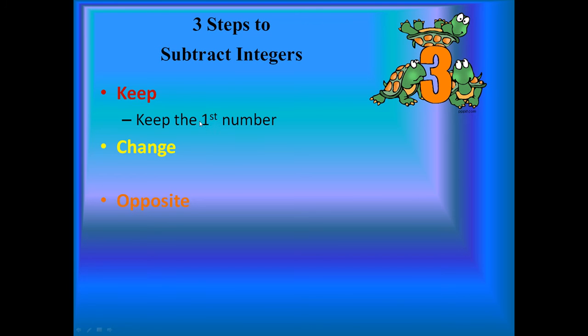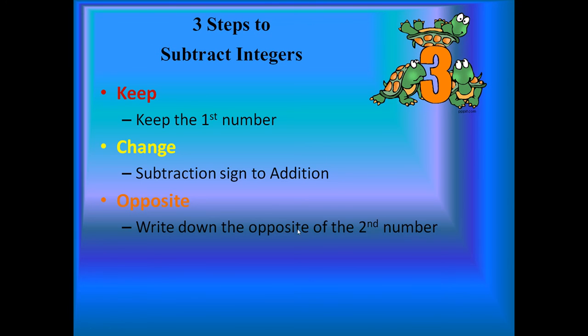Keep the first number. So we're going to just change the subtraction sign to addition. Why? Because we like to add and there's two rules to adding and you already know them. So why don't we just add? Nobody likes subtracting. So keep the first number, change the subtraction sign to addition, and then we're going to do the opposite. We're going to write down the opposite of the second number. So first number stays the same, change subtraction to addition, and we're going to write down the opposite of the second number.